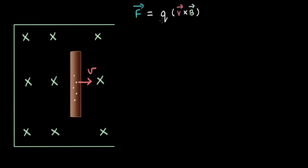So even these electrons are moving to the right in a region of magnetic field. When charges move in a magnetic field they experience a Lorentz force — a magnetic force — and the magnitude of that force is given by Q into V cross B.